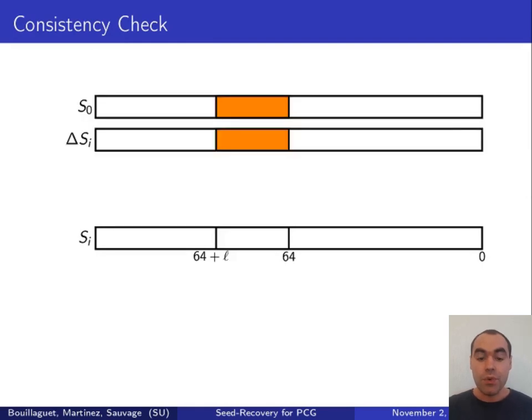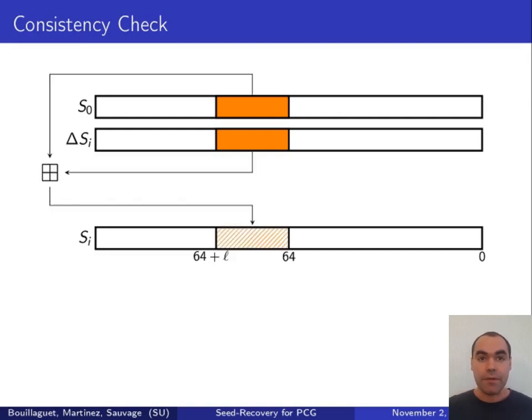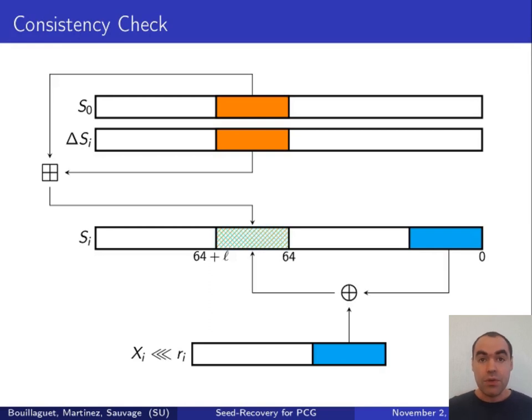We are capable of computing a part of all subsequent states in two different ways. First, we can use the partial differences that we have computed, because combining the first state with the i-th partial difference yields a part of the i-th state. The other way is to use the output and the rotation. Because with the i-th output, the i-th rotation, and the least significant bits of the i-th state that we know, we can just by XORing then compute the same part of the i-th state.